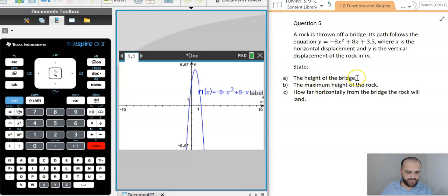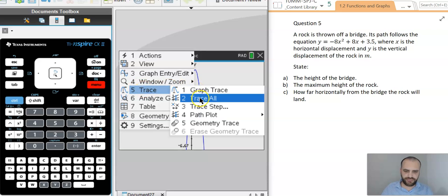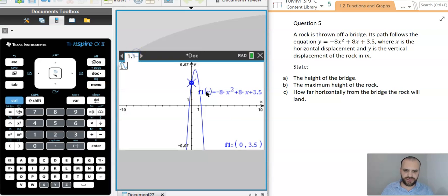Now, the height of the bridge. The height of the bridge is the place where it was thrown from, and it's right there. So, what I'm going to do is just a trace. All right, I'm just going to do a graph trace.